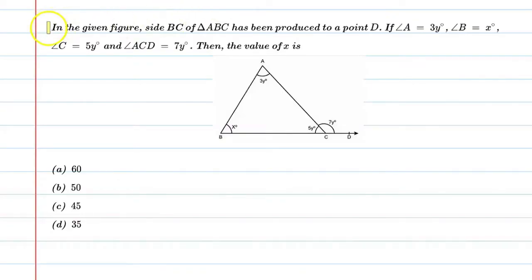Hello students, let's solve this question. In the given figure, side BC of triangle ABC has been produced to a point D. If angle A is equal to 3Y, angle B is equal to X, angle C is equal to 5Y, and angle ACD is equal to 7Y, then the value of X is.